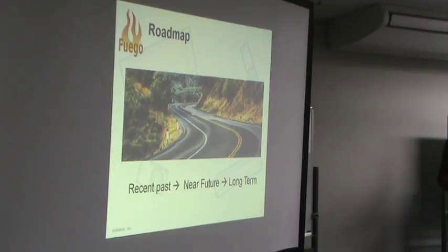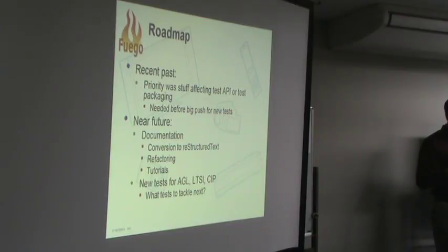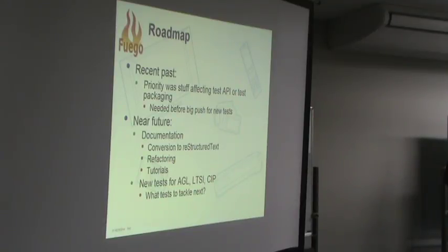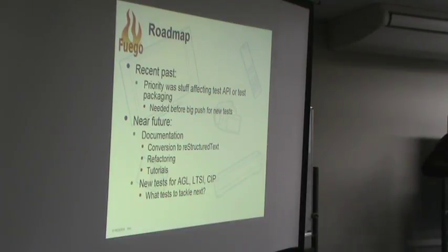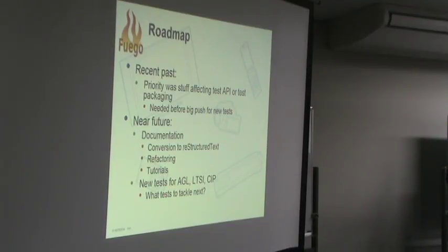Now for the roadmap — recent past, near future, and a bit of the long term. The features we focused on for the 1.2 release affected the test API and test packaging: the unified output format affecting the parser, and the dependency system affecting the base script. The release prior to that, 1.1, moved a lot of directories around. That's all settled now, and we wanted to start using it before a big push for new tests, because we don't want to change a bunch of tests when the API changes. We now feel more comfortable that we'll stay with this test API for a while.